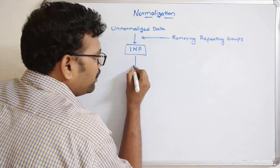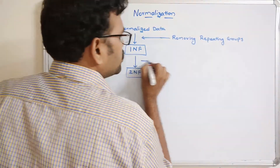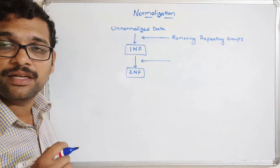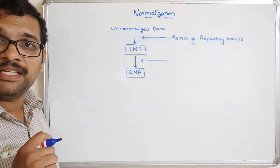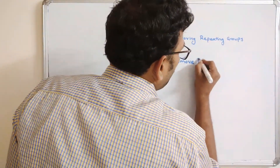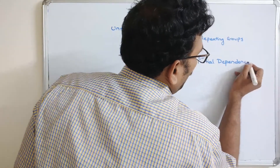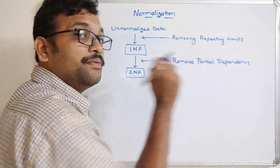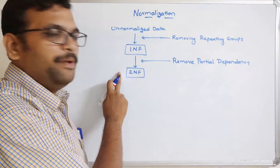Moving to 2NF: after achieving 1NF, we need to find partial functional dependencies. We have discussed fully functional dependency and partial functional dependency — we must identify whether partial functional dependencies exist. If so, we remove those partial dependencies. After removing them, the relation is in 2NF. The relation must be in 1NF first, then we remove partial dependencies to reach 2NF.